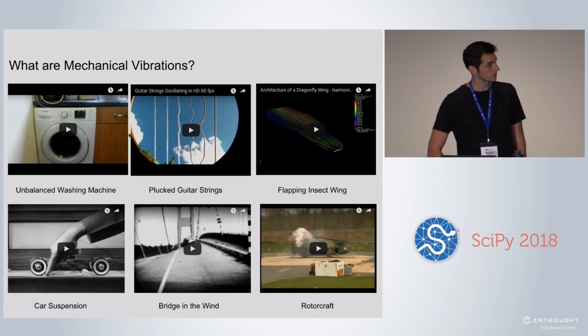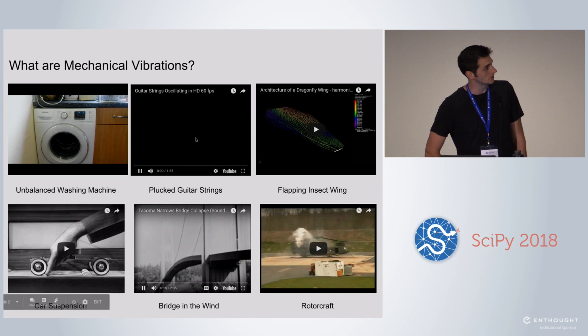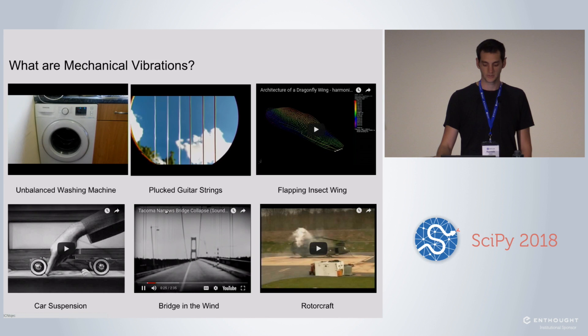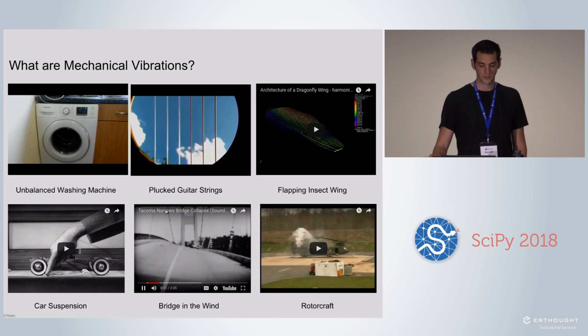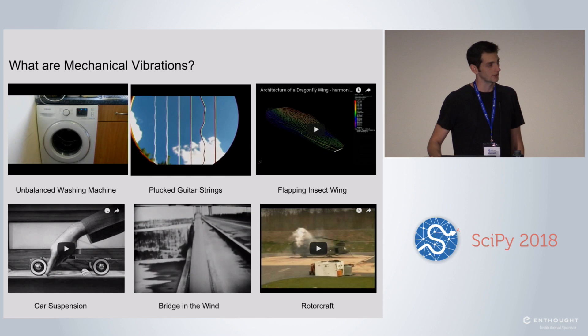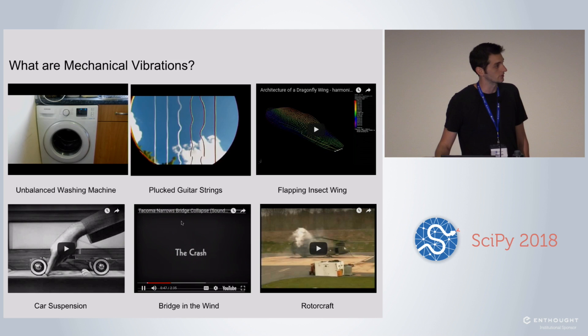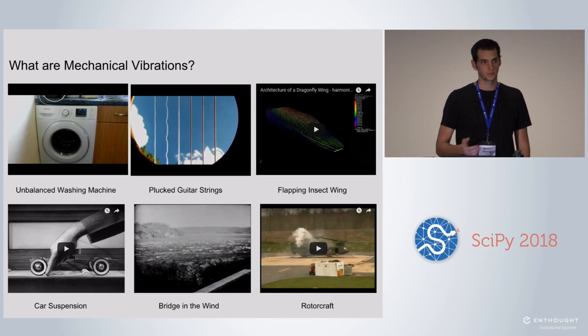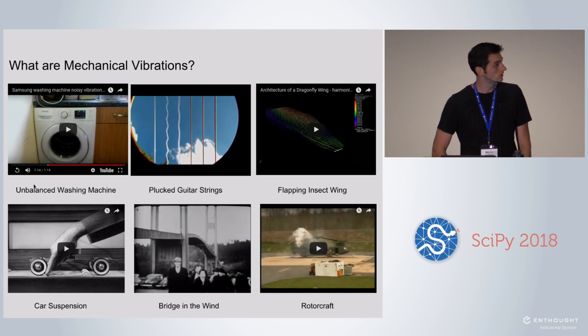If you're not familiar with what mechanical vibrations are, here's a few examples. There are vibrations that are desirable and vibrations that are undesirable. Instruments are a good example of desirable vibrations - they create music through vibrating strings or vibrating membranes that create pressure waves. We also have examples of undesirable vibrations like a washing machine that has an imbalanced load, and the famous example of the Tacoma Narrows Bridge that essentially vibrated itself apart. Our task is basically to teach undergraduate engineers how to analyze systems like these and work with them.